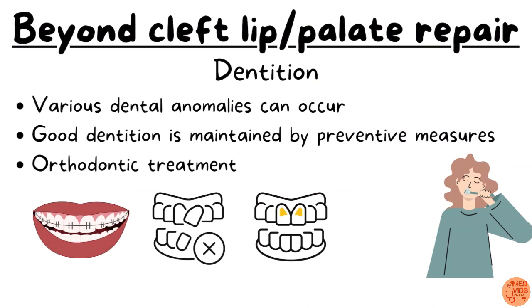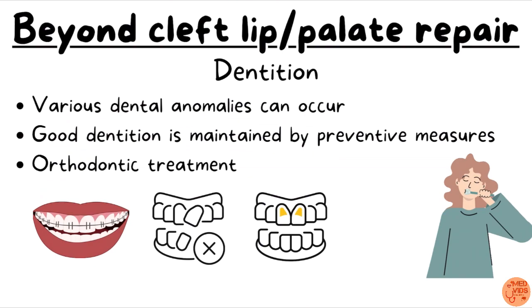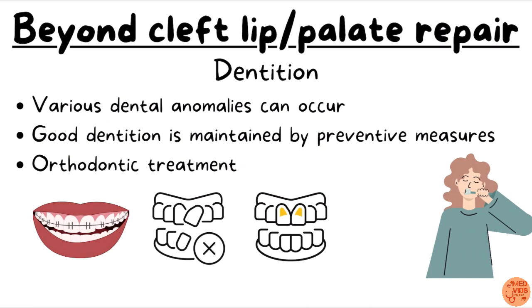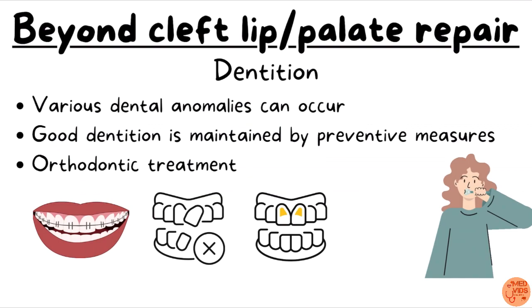Regarding dentition, there can be various dental anomalies in these children such as supernumerary teeth and dental malocclusion. It is essential to maintain good dentition in these children because, after correction of cleft lip and palate, orthodontic treatment can be provided. Good dentition is a major prerequisite for orthodontic treatment, so it is maintained so that better dentition can be achieved for these children at a later stage.